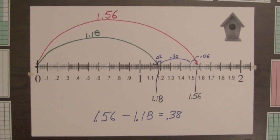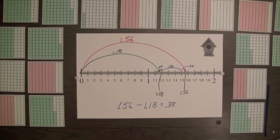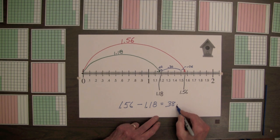So the difference in the dimensions of the openings of the 2 birdhouses is 38 hundredths of an inch.